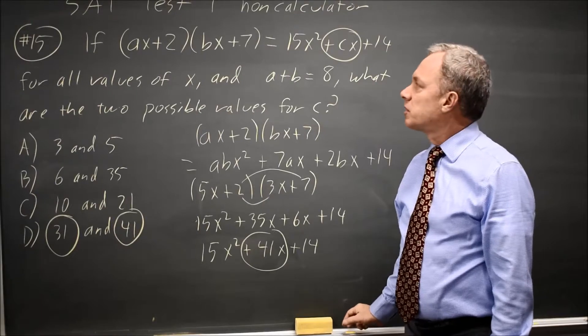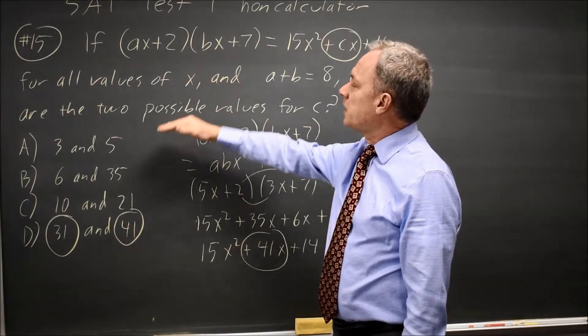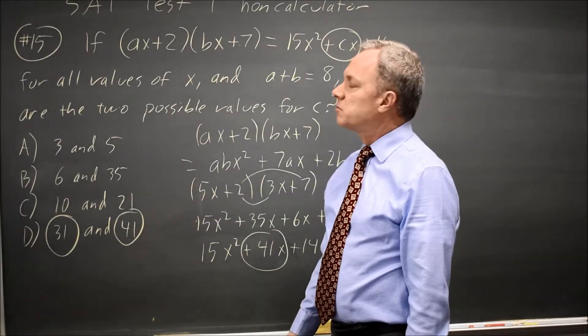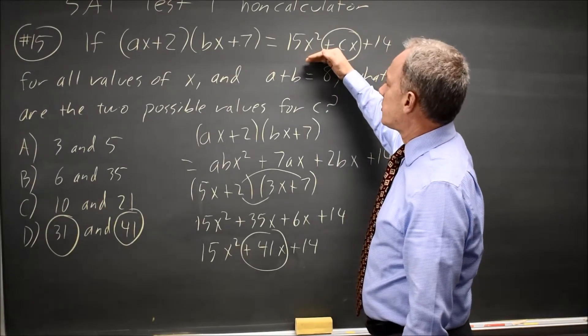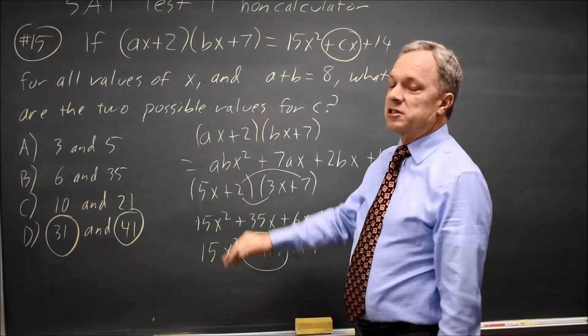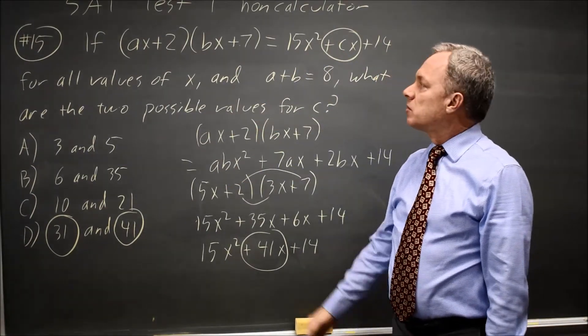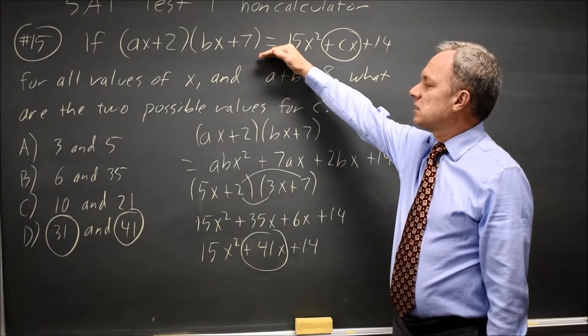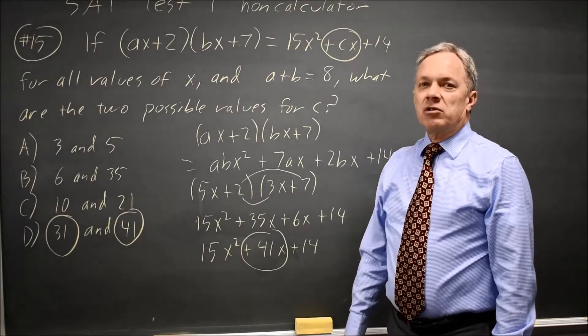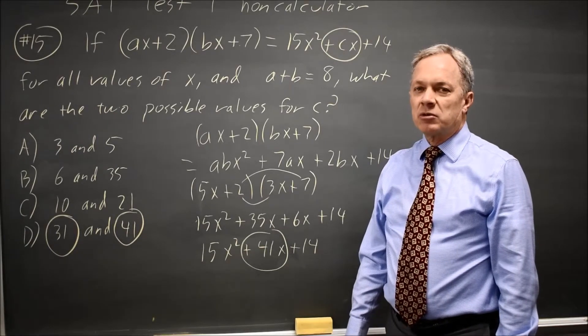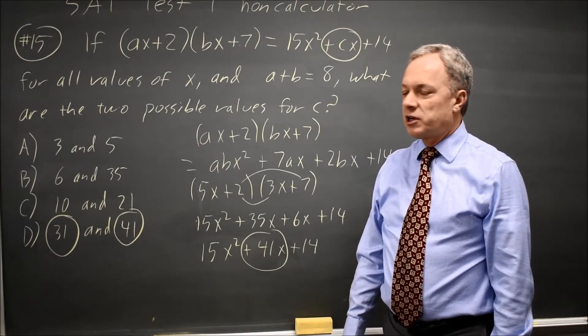When you see a quadratic in factored form and your answers are standard form, or the reverse, you see a quadratic in standard form and your answers are factored form, or when you see something like this, where they've set factored form equal to standard form, what they're asking for is FOIL.